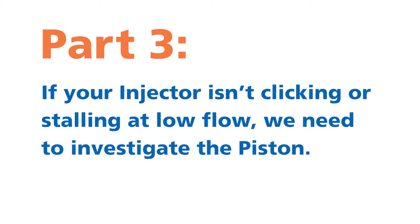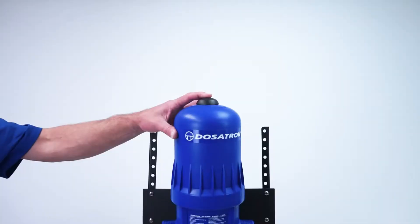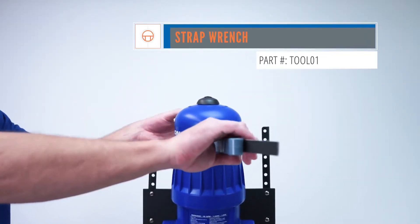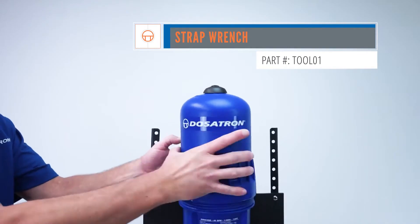Part three: if the injector isn't clicking or stalling at low flow, we need to investigate the piston. Turn the water off and press the air bleed button a few times to release the pressure. Use the strap wrench to loosen the bell housing. Then unscrew, remove, and set it aside.